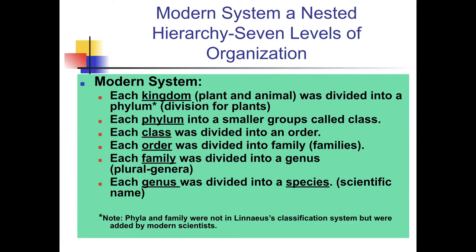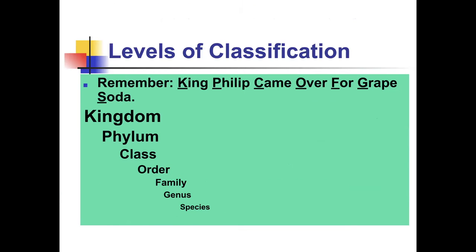In the modern system, each kingdom—plant and animal—was divided into phylum, then class, then order, then family, then genus (plural: genera), and finally species—the scientific name. A saying to help you remember: 'King Philip came over for great soda'—Kingdom, Phylum, Class, Order, Family, Genus, and Species. There is one more level: above the kingdom is what we call the domain.